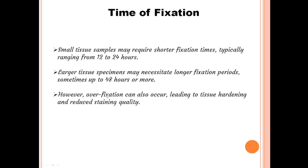Fixation time with formalin can vary depending on several factors, including the size and type of tissue being fixed, the intended downstream applications, and the specific protocol being followed. Small tissue samples may require shorter fixation times, typically ranging from 12 to 24 hours, while larger tissue specimens may necessitate longer fixation periods, up to 48 hours or more. However, over-fixation can also occur, leading to tissue hardening and reduced staining quality. It is essential to follow established protocols and guidelines for fixation times specific to the tissue type and experimental requirements to achieve optimal results.